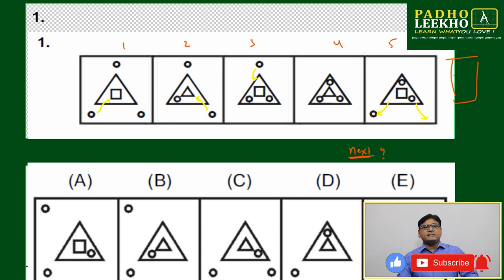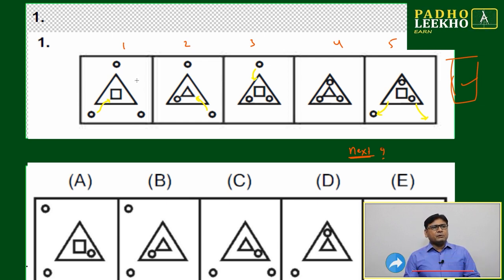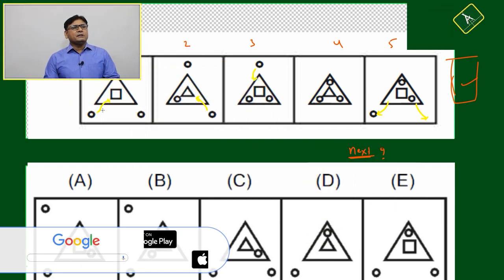Suppose if the next image is there, then which image can you pick from option A, B, C, D, or E? We will try to understand what is happening here. From image number 1 to 2, what is happening?